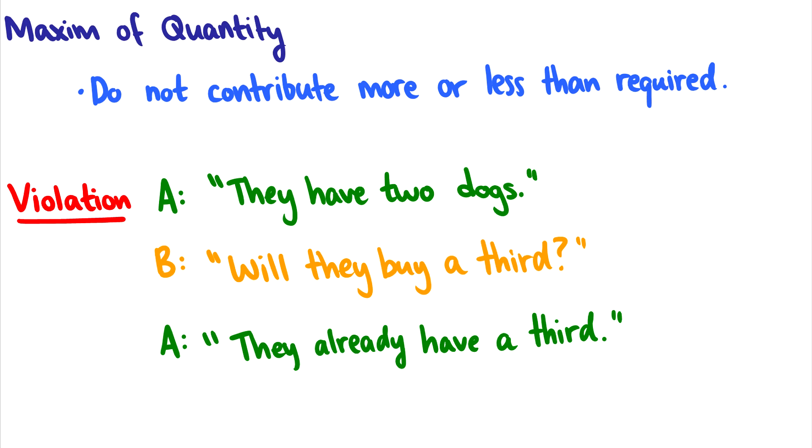Here's a more interesting violation on the screen. This is a conversation between two people. A says they have two dogs. B asks, will they buy a third? And then A responds and says, oh no, they already have a third. Okay. Now this is super weird because in A, they said they have two dogs. Why wouldn't they say they have three dogs? This is a violation of quantity.